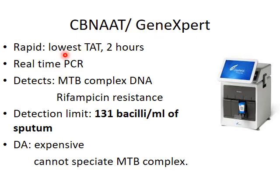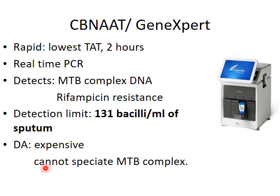GeneXpert has the lowest turnaround time of only two hours. Within two hours, you can get the report. The principle it uses is automated real-time PCR. It detects two things: Mycobacterium tuberculosis complex DNA, and resistance to the drug rifampicin. The detection limit of this test is 131 bacilli per ml of sputum. However, it is expensive and cannot speciate MTB complex — species identification cannot be done.